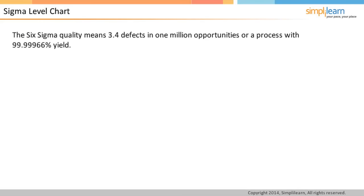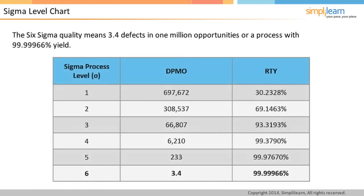Let us look at the Sigma level chart. The Six Sigma quality means 3.4 defects in 1 million opportunities, or a process with a 99.99966% yield. The Sigma level chart on the screen shows the values for other Sigma levels. Please take a look at the values carefully.